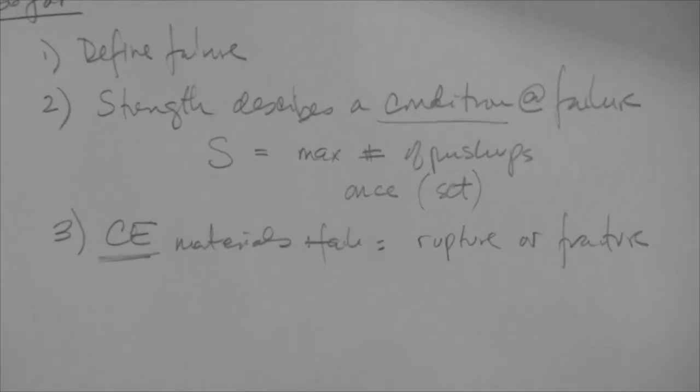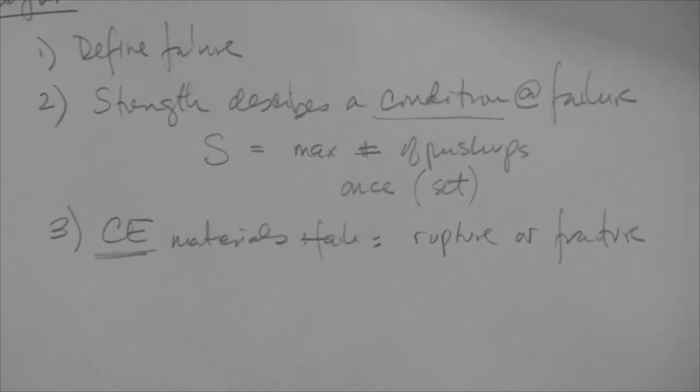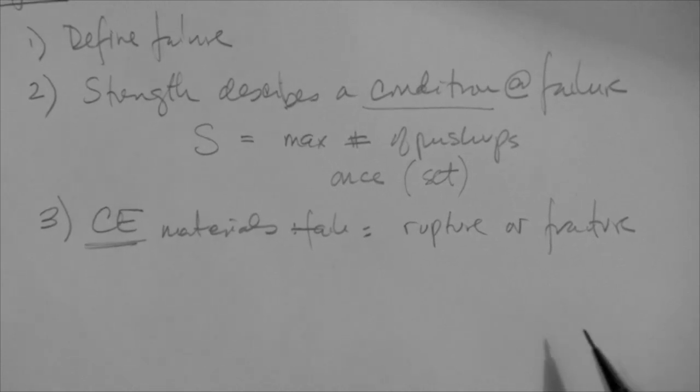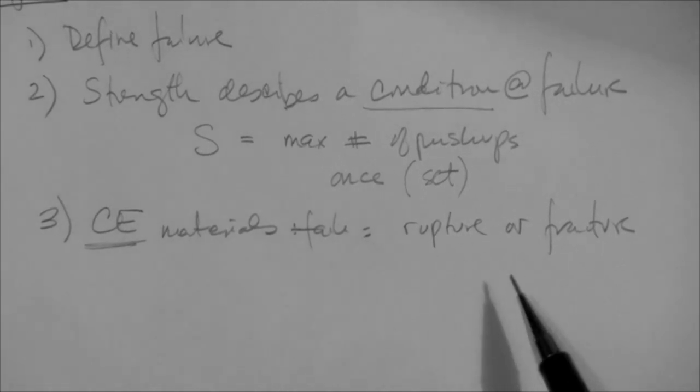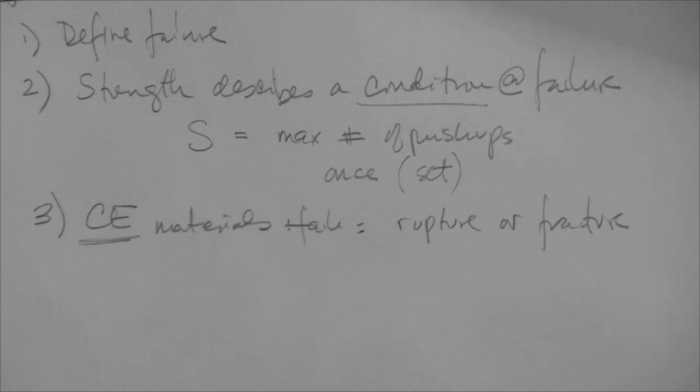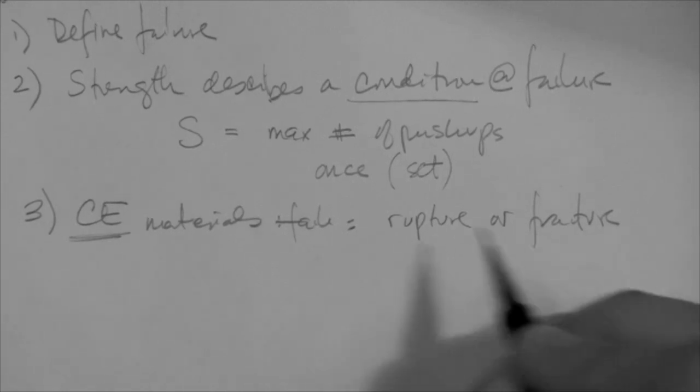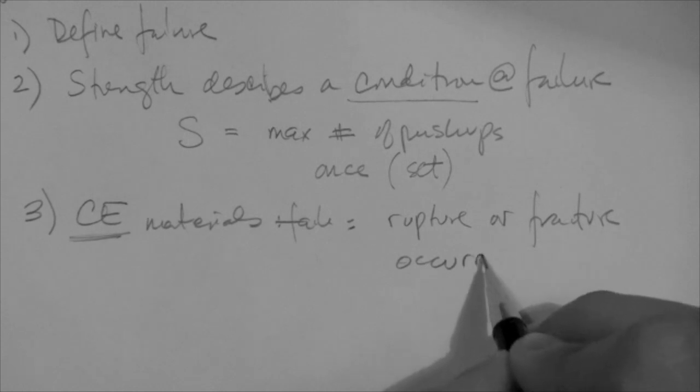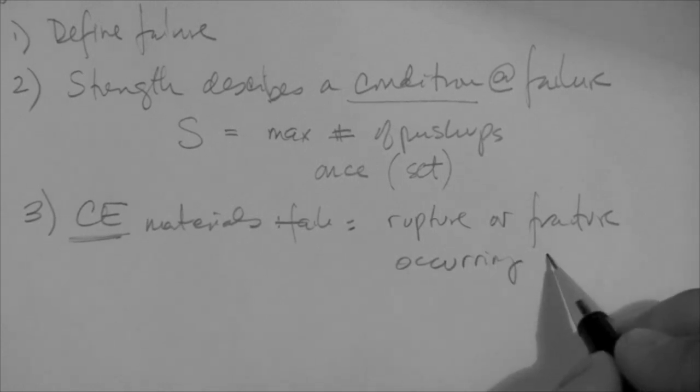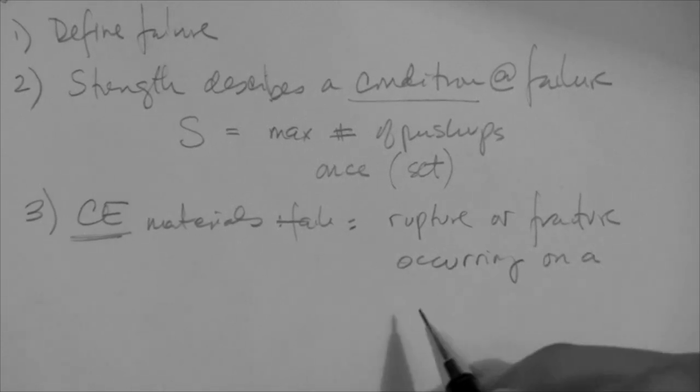Here, I'm basically talking about rock, concrete, soil. Not really steel. Steel actually has a yield point, and that's what we use as the failure point. But civil engineering materials in general fail by a rupture or fracture that occurs on a particular failure plane.